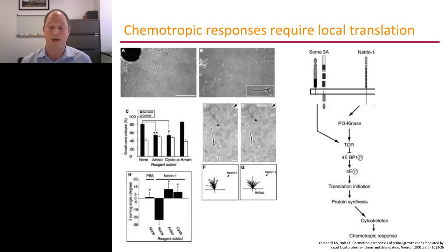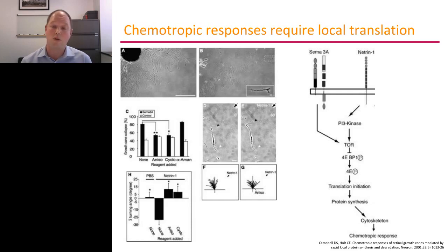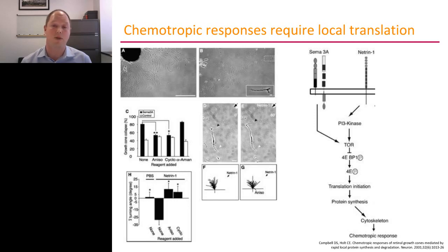Based on this experiment and many others, she developed the following signaling pathway, where both Semaphorin 3A and Netrin lead to the activation of local protein synthesis, and that protein synthesis then affects the cytoskeleton in some way, leading to repulsion or growth cone collapse. However, at the time it was not known which proteins are being synthesized in response to Semaphorin or Netrin that mediate immediate local growth cone changes.